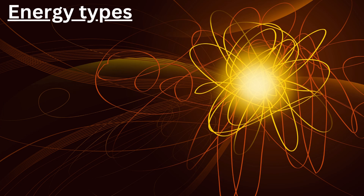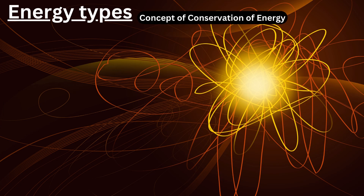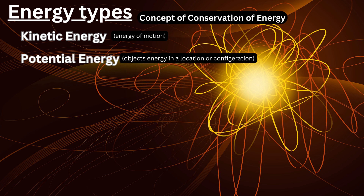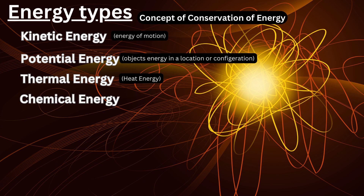The several types of energy that exist can be used to explain the concept of conservation of energy. Kinetic energy, which is the energy of motion. Potential energy, which is the energy held in an object as a result of its location or configuration. Thermal energy, which is the energy of heat. Chemical energy, electrical energy, and many other forms of energy are just a few examples.